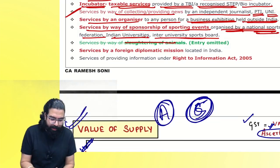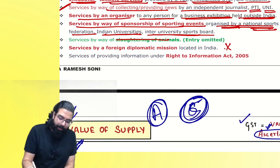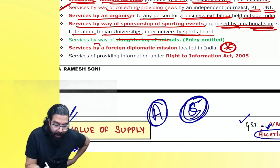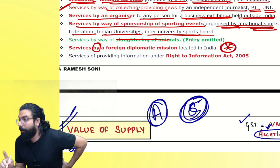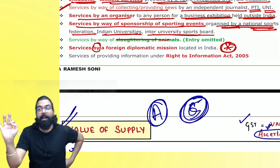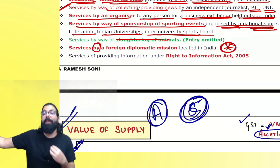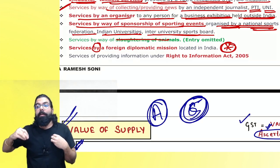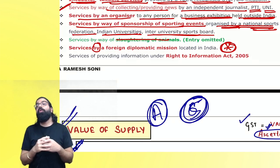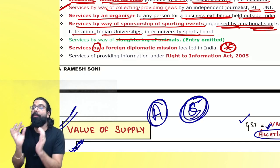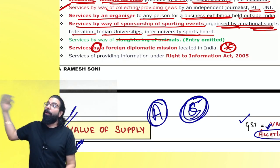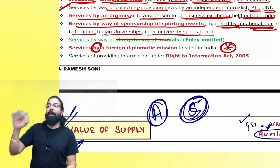Slaughtering of animals — earlier it was exempted, now GST is there. This point is important. Services provided by a foreign diplomat mission in India — his service is exempt. But if anyone is giving service to a foreign diplomat mission — GST is payable. In the exam, students see only 'foreign diplomat mission' and think it's exempt — you have to see only 'by' is exempt. Services provided to a foreign diplomat mission is always taxable.